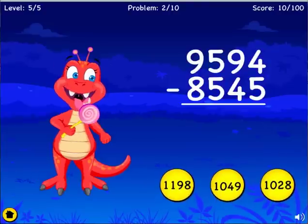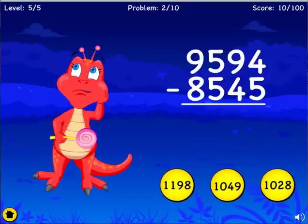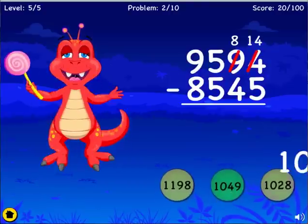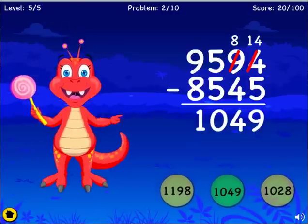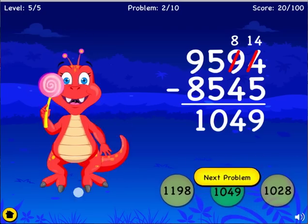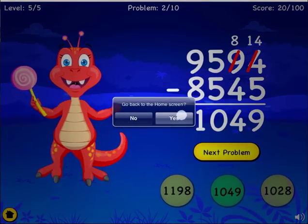What is nine thousand five hundred and ninety-four minus? You are right. The correct answer is one thousand forty-nine. You are right. Thank you.